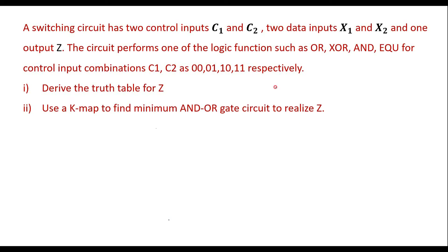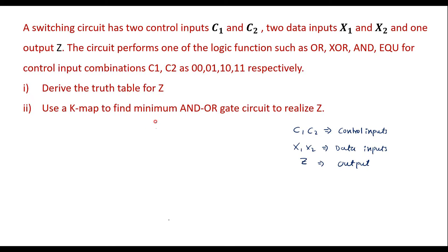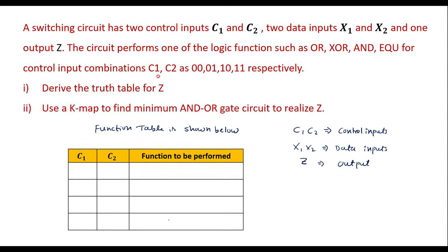In this logic, C1 and C2 are control inputs, and X1 and X2 are data inputs, while Z is the output. First, let me write the function table, which gives the summary of this logic. When C1 is 0 and C2 is 0 — that is, for combination 00 — it should perform the OR operation.